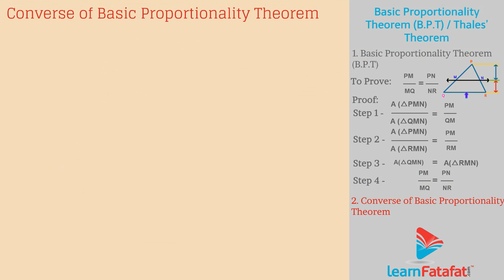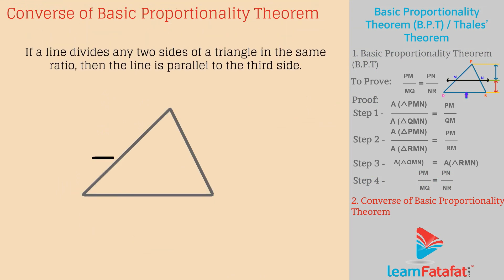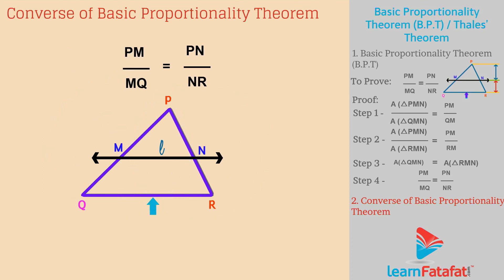Converse of the Basic Proportionality Theorem: If a line divides any two sides of a triangle in equal proportion, then the line is parallel to the third side. Mathematically, if line L divides the sides PQ and PR of a triangle PQR at points M and N, such that PM divided by MQ is equal to PN divided by NR, then L is parallel to QR.